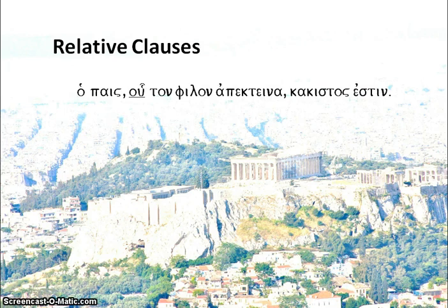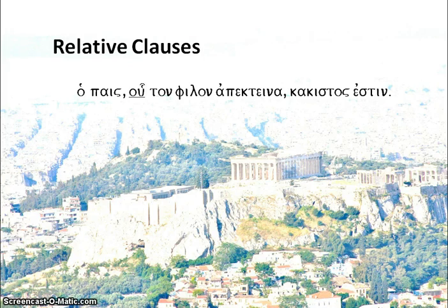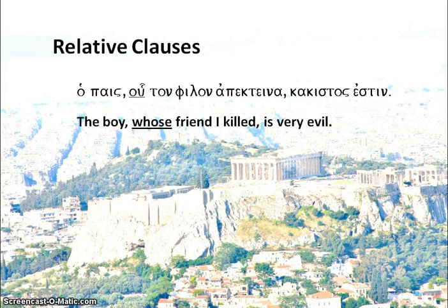Let's have a quick example. Our relative clause is introduced by the relative pronoun, which is underlined here, but the main part of the sentence is actually the part outside the commas: 'The boy is very evil.' The relative clause gives us an extra bit of information about the boy: 'The boy, whose friend I killed, is very evil.' The relative pronoun is 'whose' because 'who' in the Greek is genitive, and so we translate it as 'whose'.